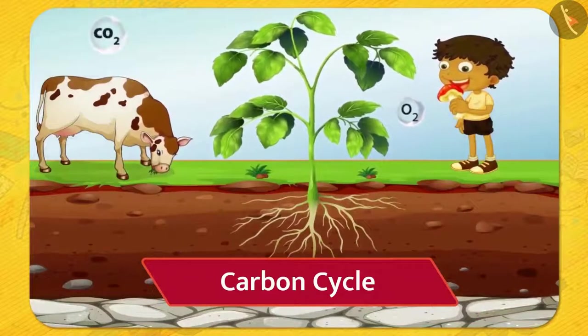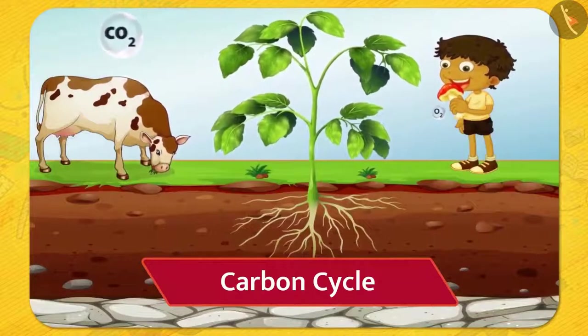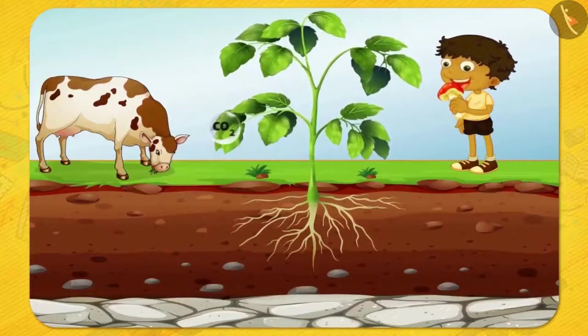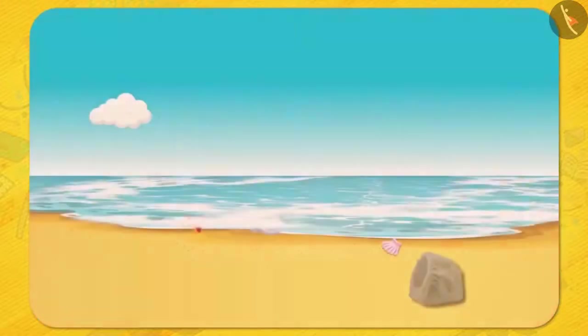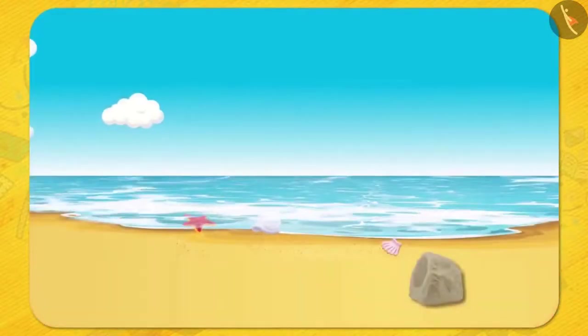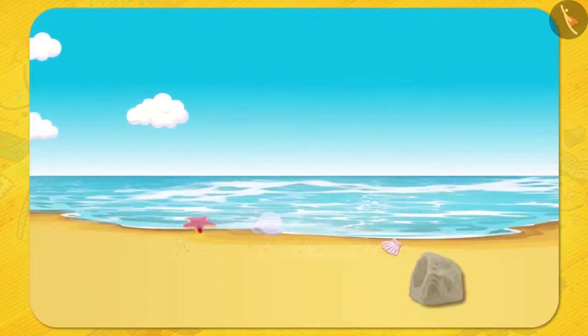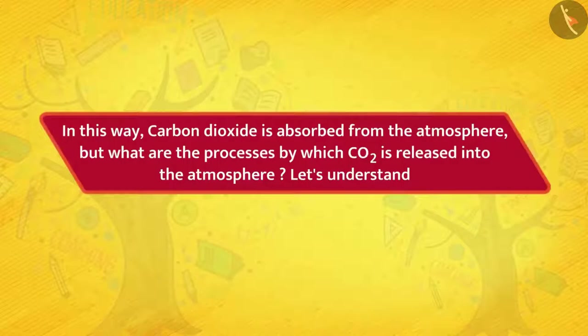Trees absorb carbon dioxide present in the atmosphere and prepare their food by the process called photosynthesis. Apart from this, marine animals also absorb carbon dioxide dissolved in water and make their own shells. In this way, carbon dioxide is absorbed from the atmosphere.